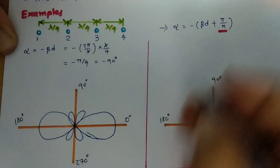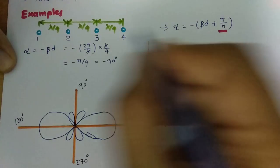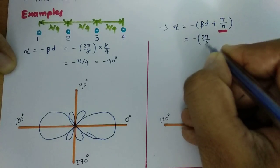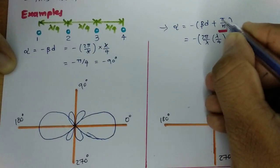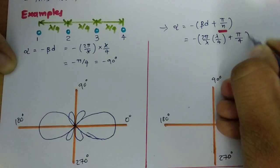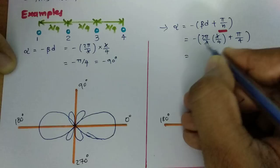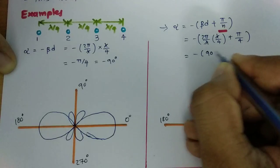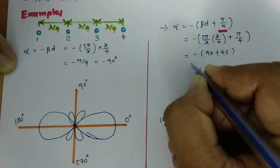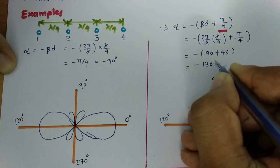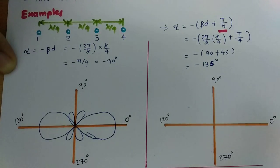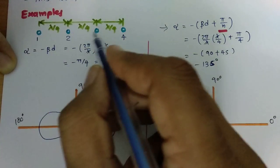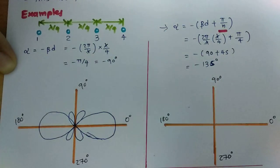For this basic 4-element array, β = 2π/λ, d = λ/4, and there are 4 elements, so π/4 is added. This gives π/2 + π/4, which is 90 degrees + 45 degrees, resulting in a total phase of -135 degrees. So by providing an additional 45 degree phase to successive elements, one can achieve improved directivity.